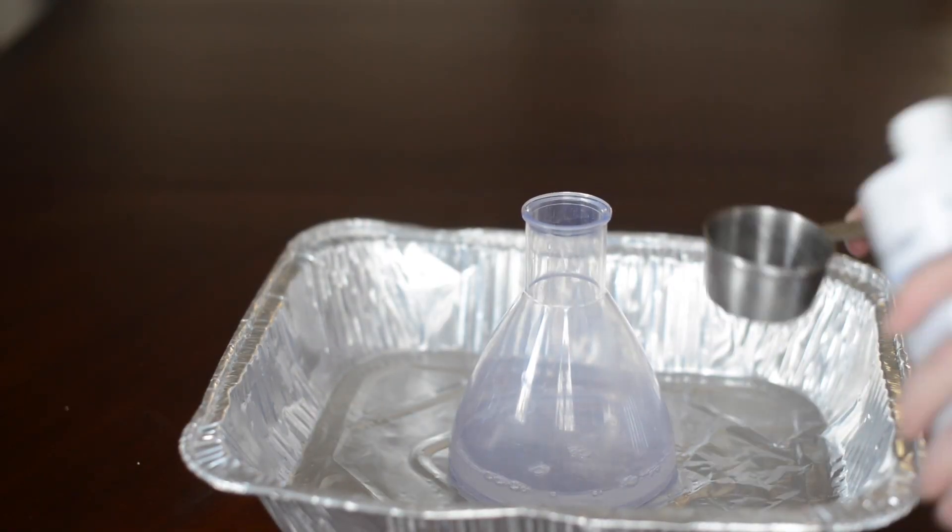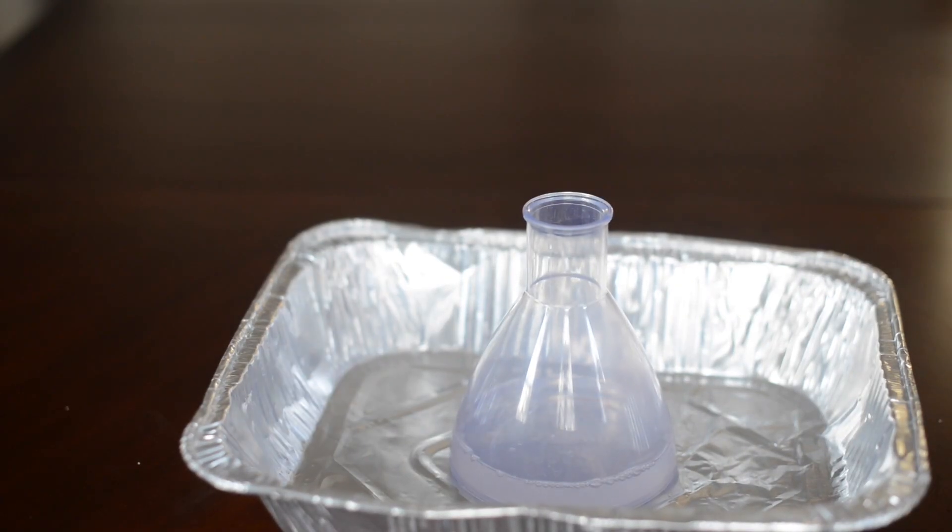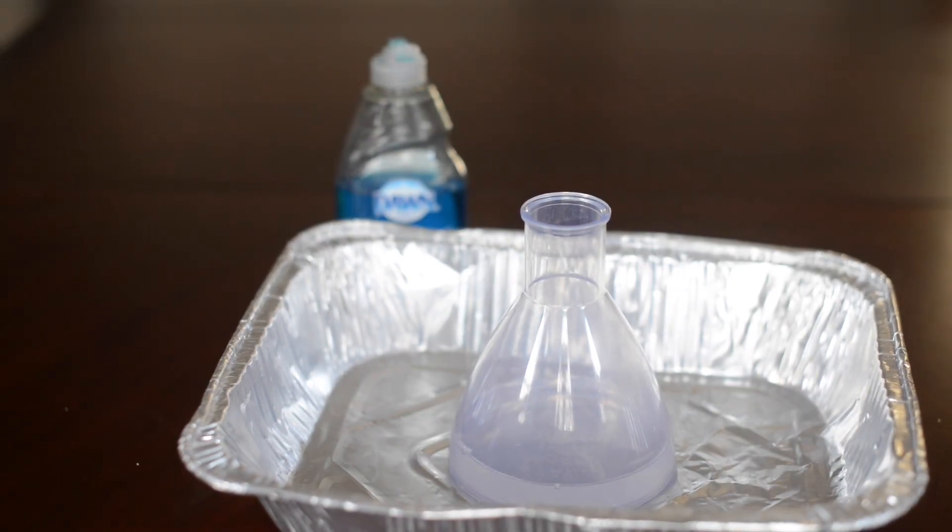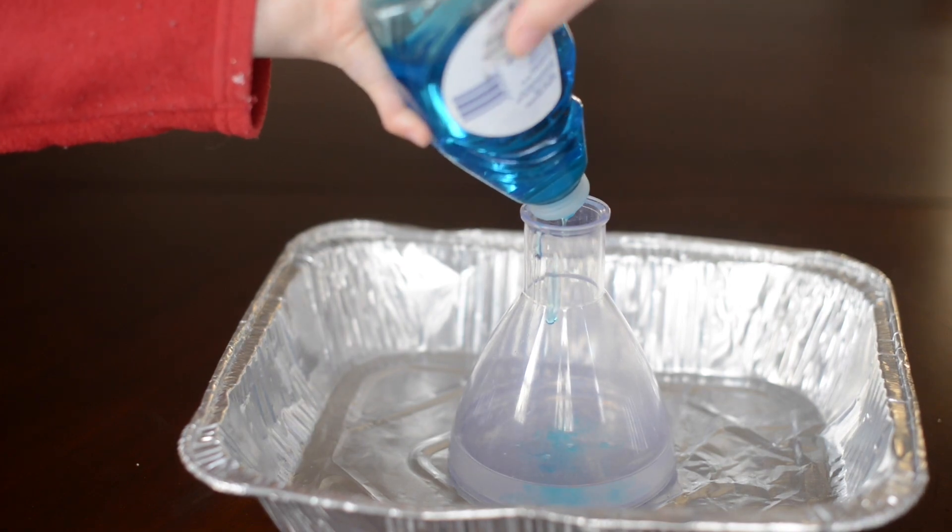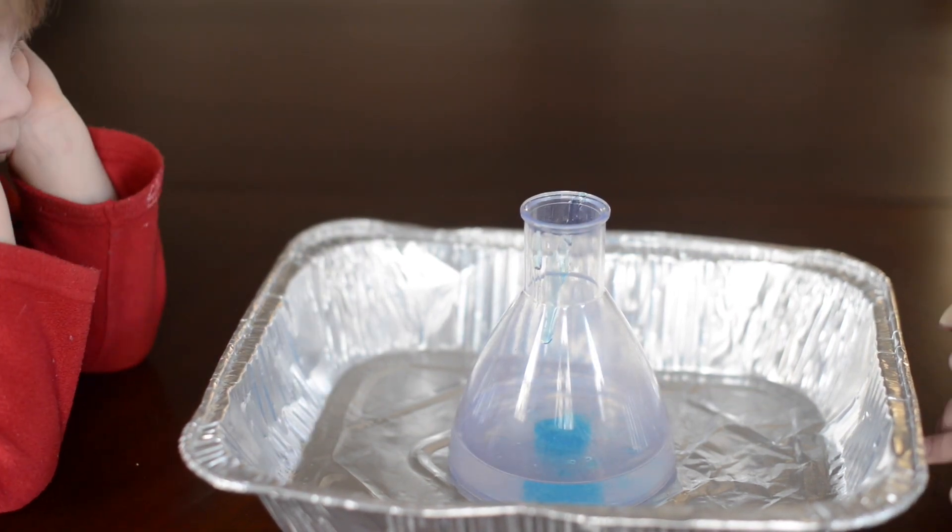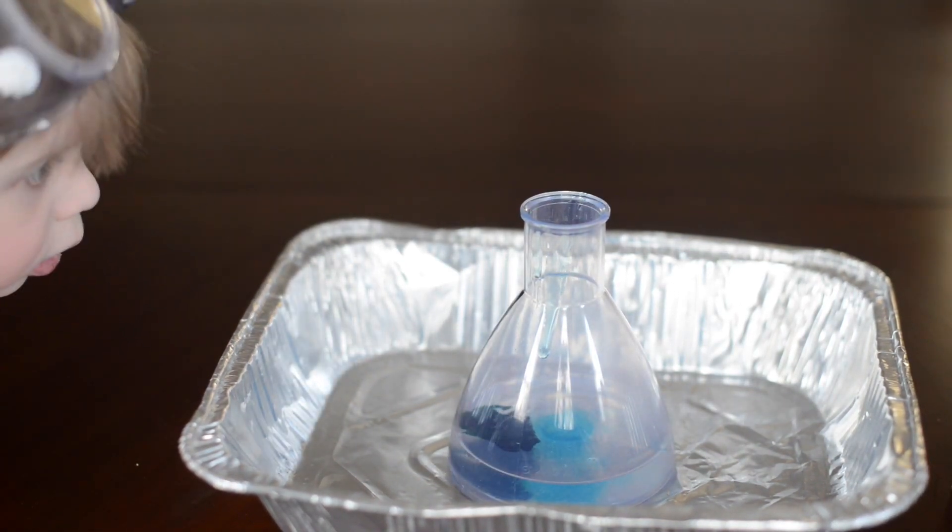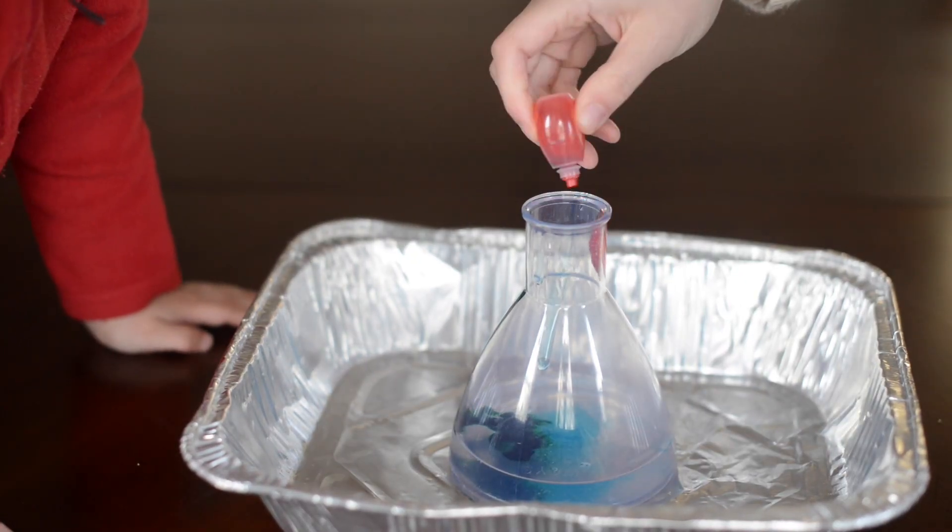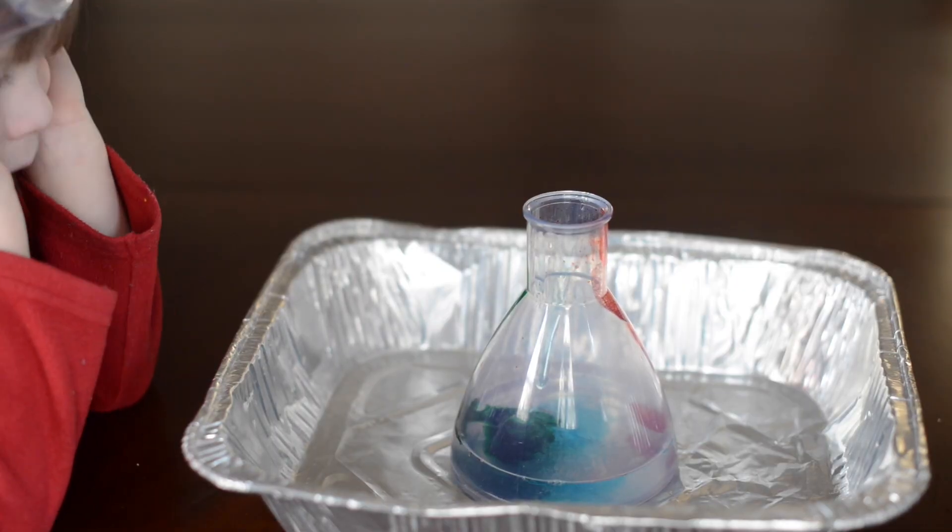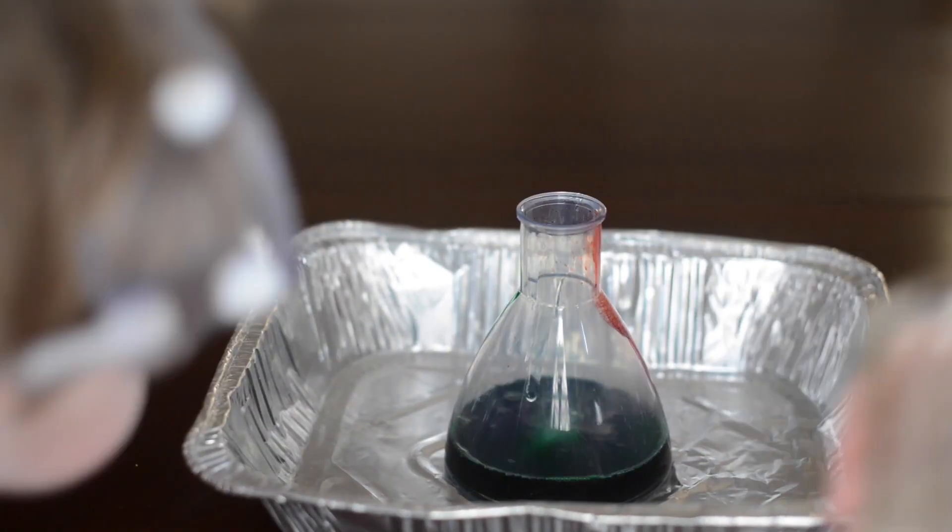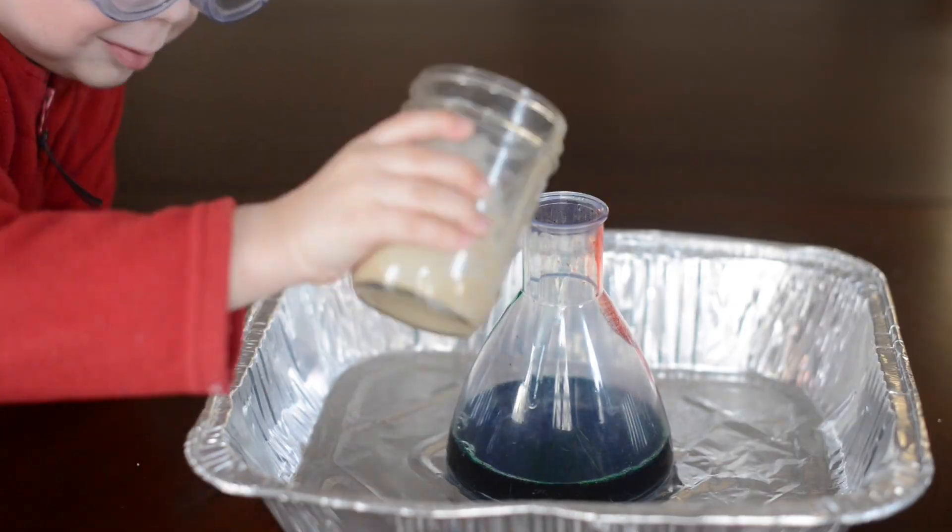Then you'll want to add half a cup of the hydrogen peroxide into your bottle. And then you put some dish soap in it. There's no specific amount for the dish soap. And then if you want the stripes on your toothpaste, put your food coloring on the sides of the bottle. And then you add your catalyst.